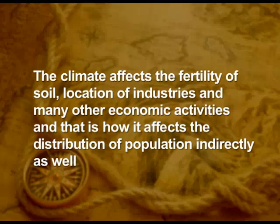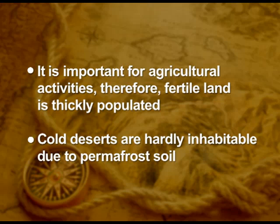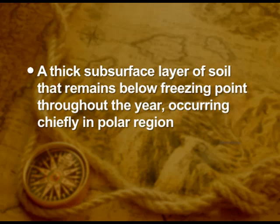Another very important factor affecting population distribution is soil. It is important for agricultural activities, therefore fertile land is thickly populated. Cold deserts are hardly inhabitable due to permafrost soil — a thick subsurface layer of soil that remains below freezing point throughout the year, occurring chiefly in polar regions. So regions of cold desert do not have a thick population.